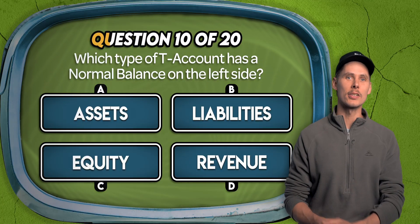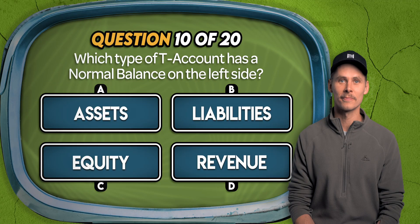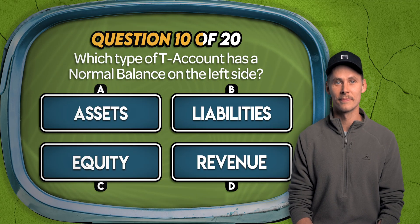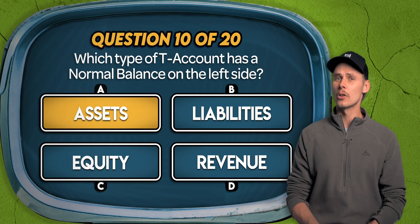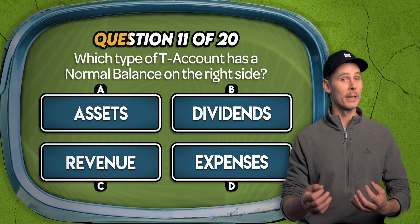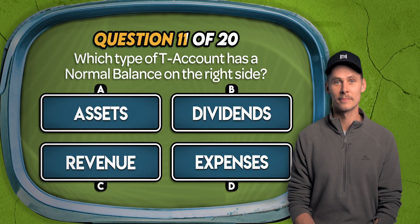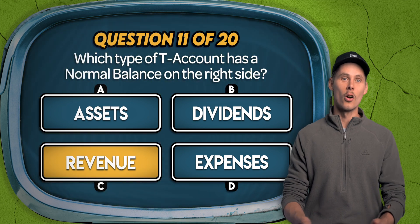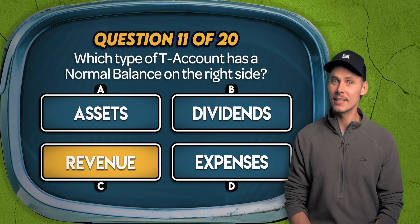Question 10. Which type of T-account has a normal balance on the left side? Is it assets, liabilities, equity, or revenue? The answer is A. Assets are represented by the A in DEALER, making them normal debit accounts — we'd expect to find their balance on the left or debit side. Question 11. Which type of T-account has a normal balance on the right side? Assets, dividends, revenue, or expenses? It's C. Revenue accounts are represented by the R in DEALER, which means they're normal credit accounts, so their balance appears on the right side.